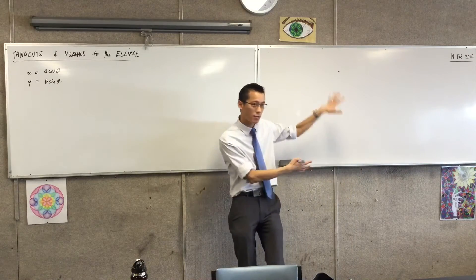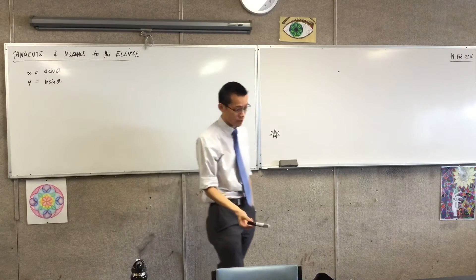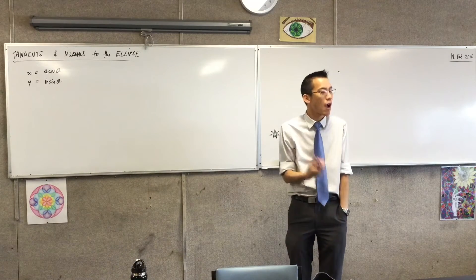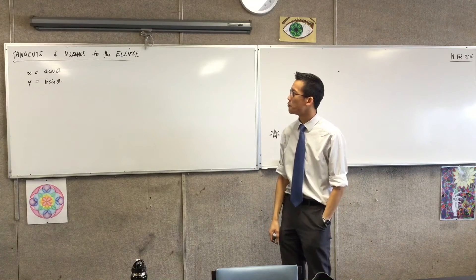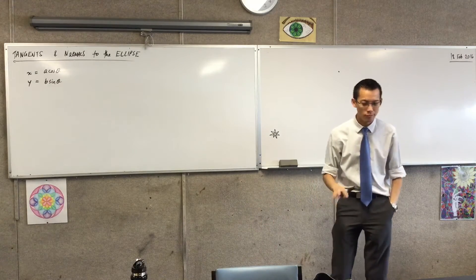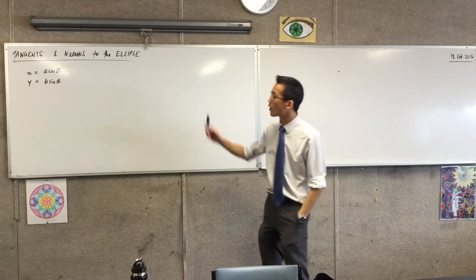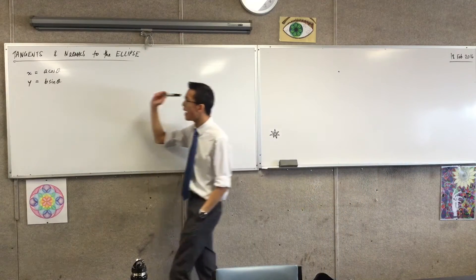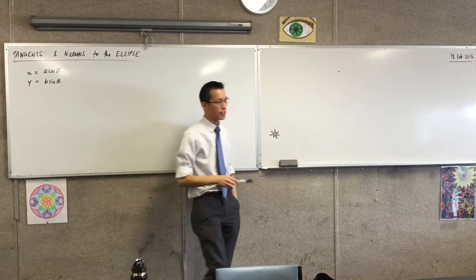And I sort of teased some of that before. Tangents, normals and chords are going to be the primary example of things that this unlocks in a bit of an easier way. We're not going to do chords today, probably. Yeah, we'll see how we go. It depends how much time we get with the exercise. But what I'm going to show you is how to develop the equation for the tangent and then the normal to the ellipse.